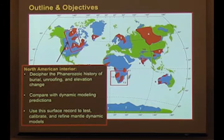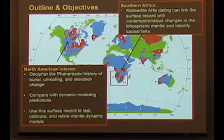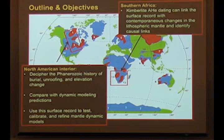The second example is from Southern Africa — one of two places on Earth where people point to and say that this area is dynamically supported today, with strong evidence for that. Here we're trying to directly date kimberlites so that we can directly tie our thermochronologic record with synchronous changes in the lithospheric mantle that we can identify by mantle xenoliths from within the same pipe. In both places, we're trying to link the surface record with deeper processes.